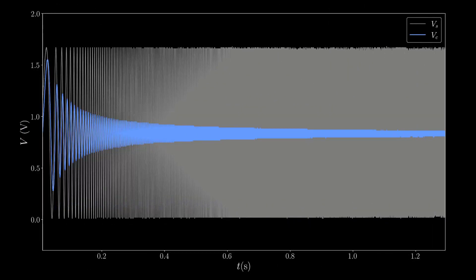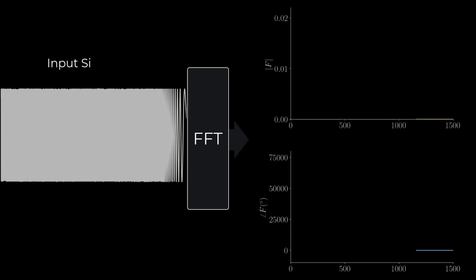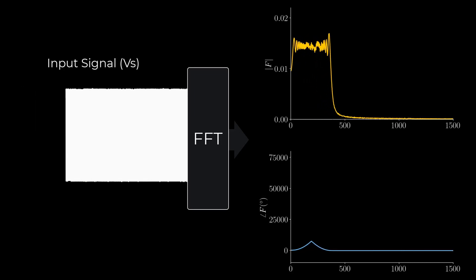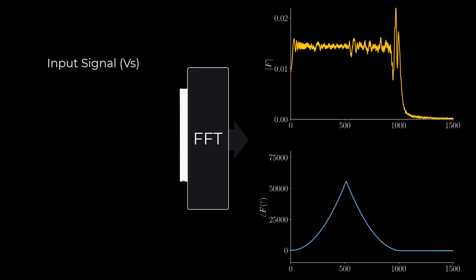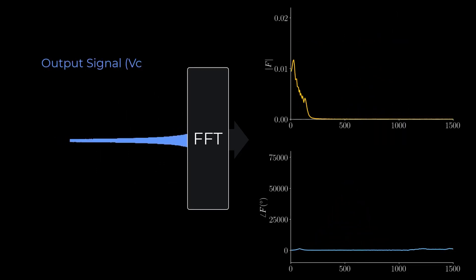Plotting both signals together illustrates this nicely. It's just a few lines of code to compute the fast Fourier transforms, commonly called FFTs, of these discrete time signals. The input chirp signal covers a broad range of input frequencies. The output signal has a similar frequency range, but has been modified by the RC filter.